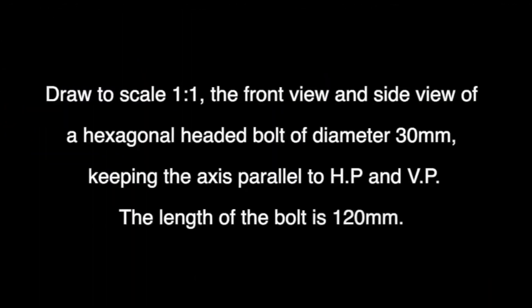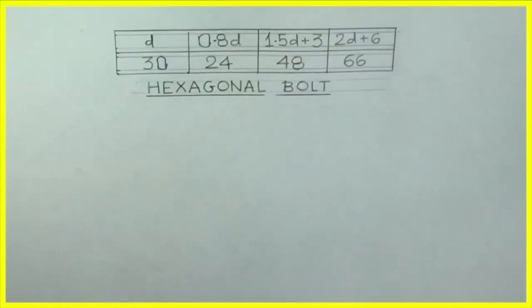Welcome to technical drawing. Today we are going to draw a hexagonal bolt. We have to draw front view and side view of a hexagonal bolt of diameter 30 mm, keeping its axis parallel to HP and VP, and the length of the bolt is 120 mm.